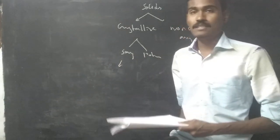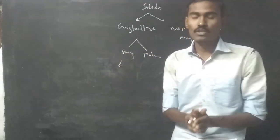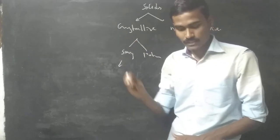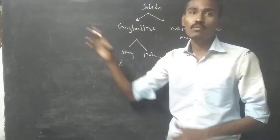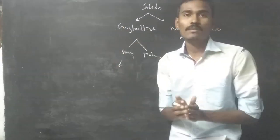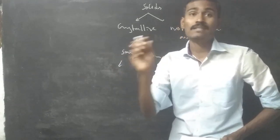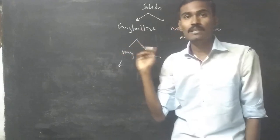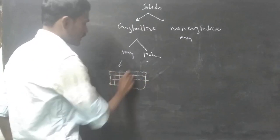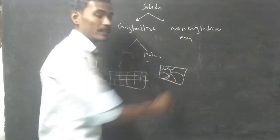Crystalline materials maintain periodicity of atoms — a regular arrangement — throughout the entire crystal. Polycrystalline materials consist of small crystallites with grain boundaries, where atoms maintain regular arrangement within each crystallite but with random orientations between crystallites.